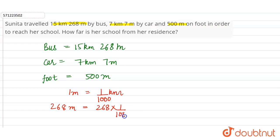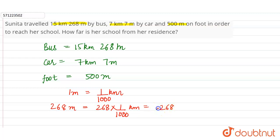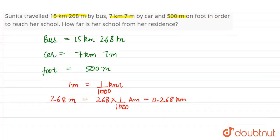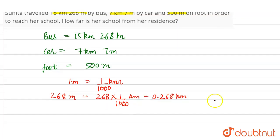There are three zeros in the denominator, so we place the decimal three digits from the left. So 268 becomes 0.268 — that is, 0.268 kilometers is equal to 268 meters.